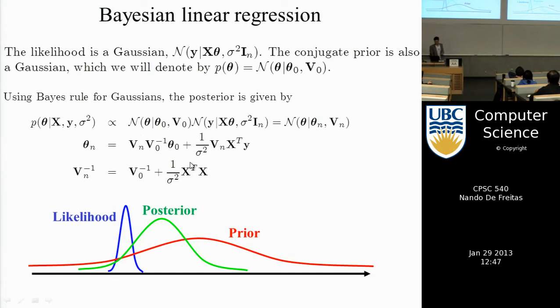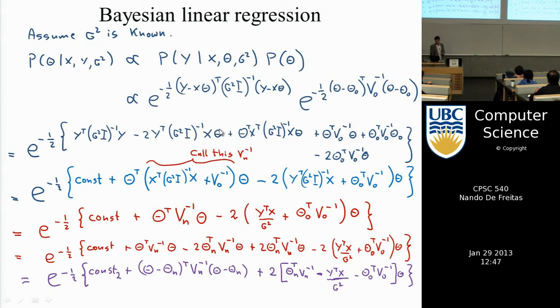And the rest is just algebra. It's taking, you take a Gaussian, you multiply it times another Gaussian, and that's what we did in this long exercise. We took the Gaussian likelihood for linear regression. We multiplied it by a Gaussian prior. And there was this very tedious exercise of completing squares.